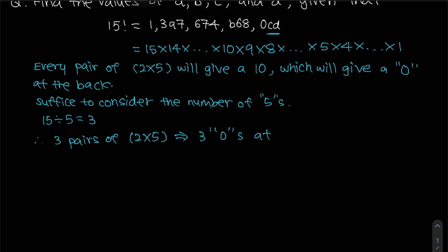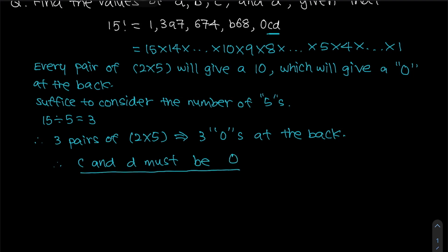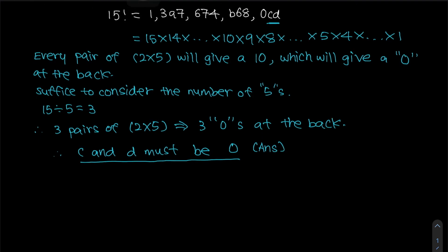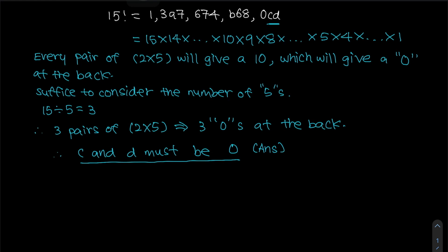Since we have three zeros at the back, we can safely say that therefore c and d must both be zero. So we have worked out what c and d are — they equal zero. We are still left with finding a and b.